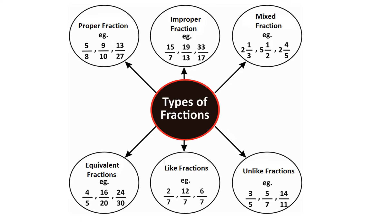Let us start with types of fractions. The first one is proper fraction. The fraction in which the numerator is less than the denominator is called a proper fraction. For example, 5 upon 8, 9 upon 10, 13 upon 27. Please keep it in mind that the value of the proper fraction is always less than 1.